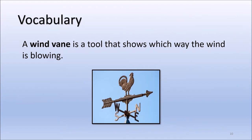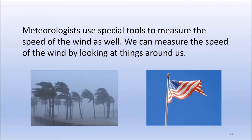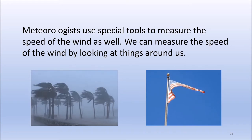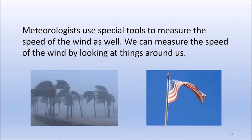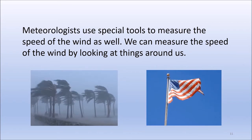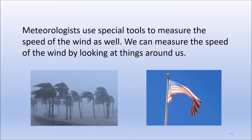Meteorologists measure the direction of the wind using a wind vane. A wind vane is a tool that shows which way the wind is blowing. Wind vanes can be on the ground or on the roof of a building. Meteorologists also use special tools to measure the speed of the wind. We can measure wind speed by looking at leaves, trees, or even a flag to figure out how fast the wind is blowing.